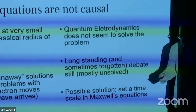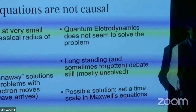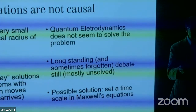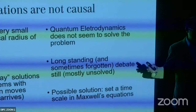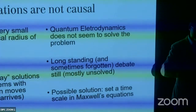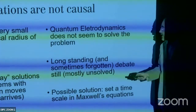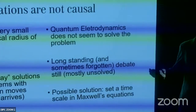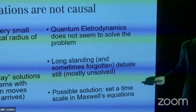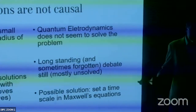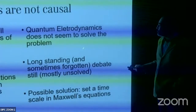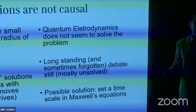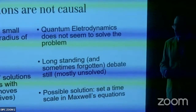For comparison, the quantum scale where classical Maxwell's equations start failing and quantum mechanics is needed is around 10⁻¹³ to 10⁻¹² meters — three orders of magnitude larger. One might think quantum electrodynamics would solve this, but quantum dynamics doesn't give a solution for this either.